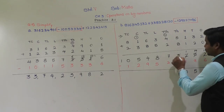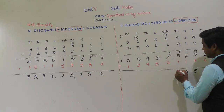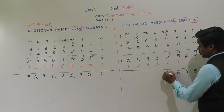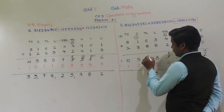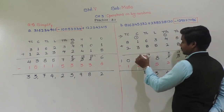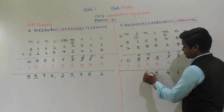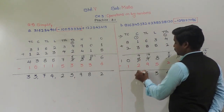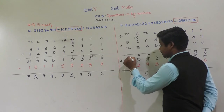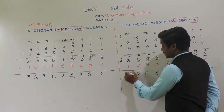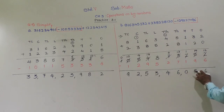Continuing: 6 minus 2 is 4, 8 minus 5 is 3. Again 4 minus 9 not possible — borrow, 14 minus 9 is 5, digit becomes 4. 4 minus 2 is 2. 0 minus 1 not possible — borrow, 10 minus 1 is 9. So the final answer is 92 crore 53,04,056. Understood? This is how we solve simplification examples.